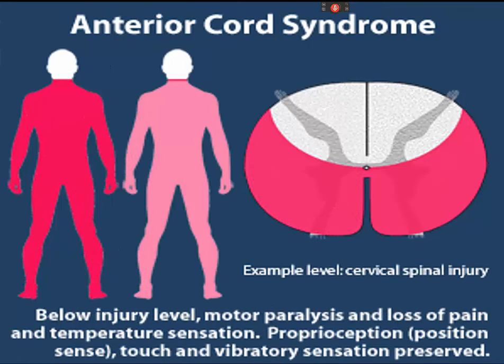Anterior spinal cord syndrome is usually seen as a result of compression of the artery running along the front of the spinal cord. Caused by damage to the anterior spinal artery, it results in compromised blood flow to the anterior spinal cord—often from bone fragments, large disc herniation, or a flexion injury causing acute compression. Patients typically have complete loss of strength below the level of injury with incomplete sensory loss: pain and temperature sensation are lost, while sensitivity to vibration, touch, position, and motion remain intact. Anterior cord syndrome presents with sudden complete motor paralysis and decreased pain and temperature sensation at and below the lesion.